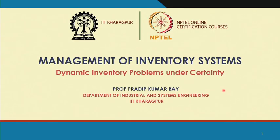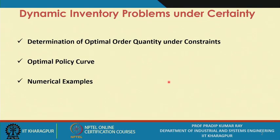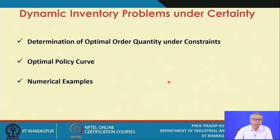During this week, we discussed a number of issues related to dynamic inventory problems under certainty. During this session, which is the fifth lecture session, I will be dealing with the determination of optimal order quantity under constraints.